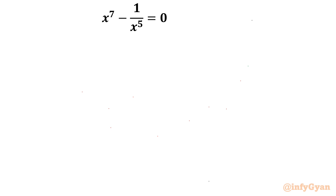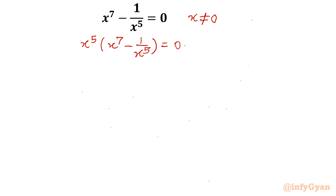As you can see, x is in the denominator, so x equal to 0 is not allowed. That means I can multiply both sides with x power 5. So I will write x power 7 minus 1 over x power 5 equal to 0 times x power 5. The resulting equation is x power 12 minus 1 equal to 0.